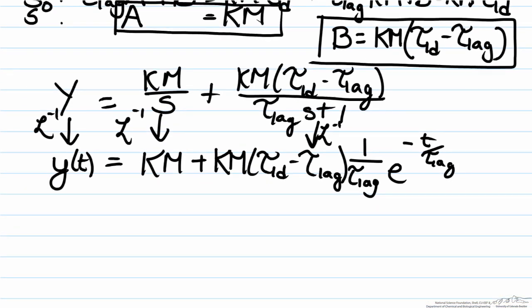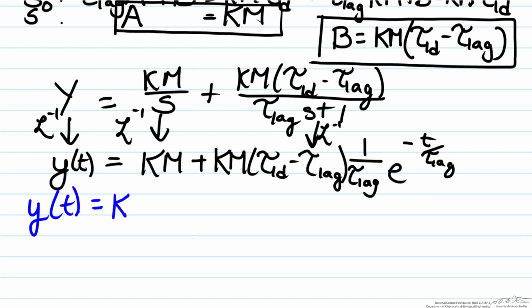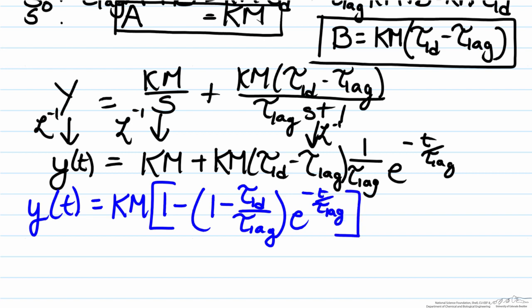After doing some simplification and rearrangement we can restate this as y of t equals km multiplied by one minus one minus tau lead over tau lag multiplied by the exponential. What does this actually look like? We see the fact that we have some decaying exponential behavior here. To give us the idea of what our curve will look like, it will be something that will decay to a steady state in either a positive or negative manner.